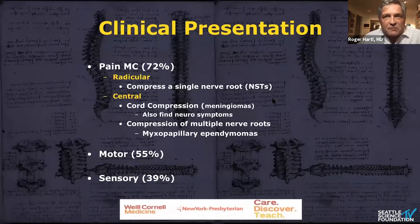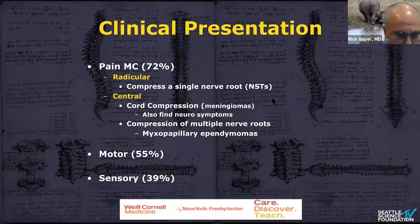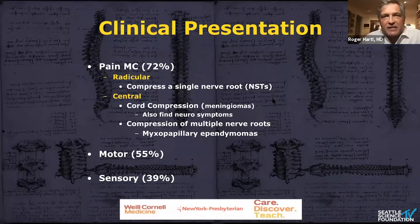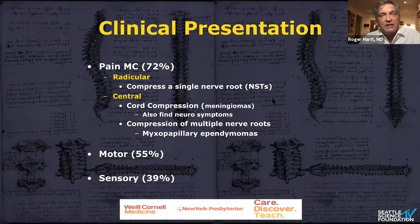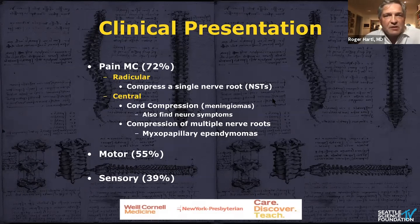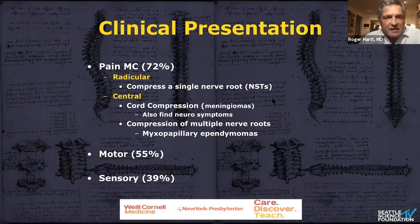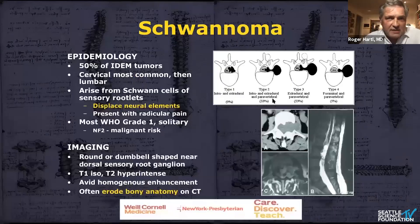The clinical presentation is frequently with pain — either radicular pain or low back or neck pain. Radicular pain is explained by the fact that many of these tumors compress or are closely related to nerve roots. They can also present with significant neurological dysfunction such as myelopathy, because they can cause spinal cord compression in the cervical or thoracic spine. Motor deficits are relatively frequent, and sensory deficits occur in about 39% of cases, but the vast majority really present with pain-related symptoms.